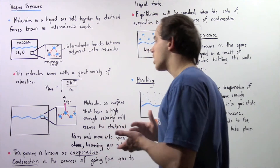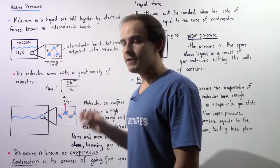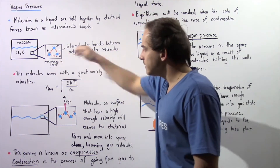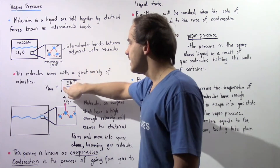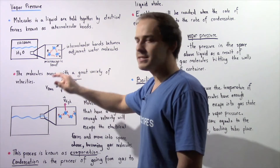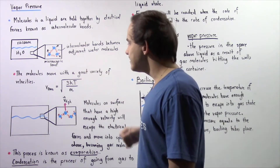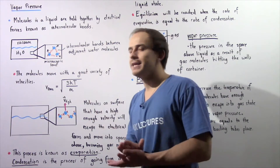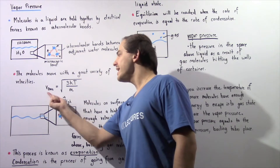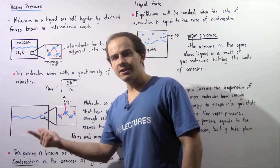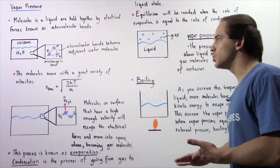Some velocities are low and some are high. We define the root mean square velocity of each molecule by the formula: the square root of 3 times k times T divided by m, where m is the mass of the water molecule, k is the Boltzmann constant, and T is the temperature given in Kelvin. Notice that as we increase the temperature, we increase the velocity and therefore increase the kinetic energy of each molecule.